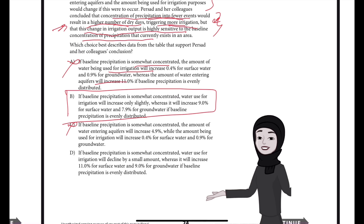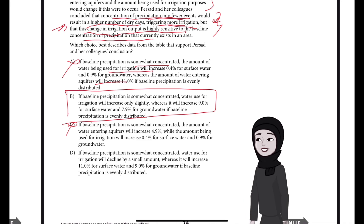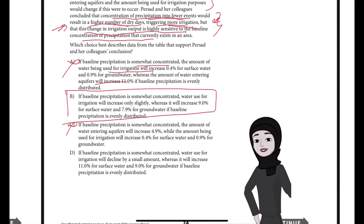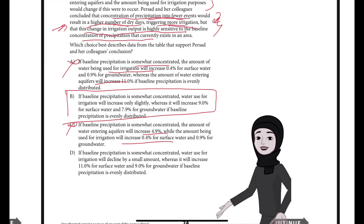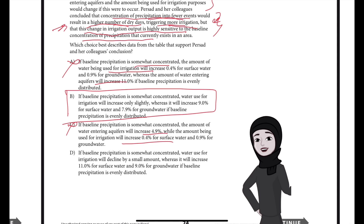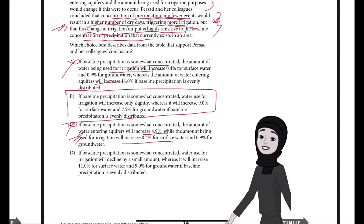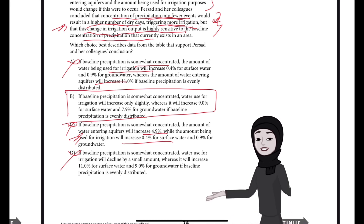Choice C is incorrect because it supports only part of Prasad and her colleagues' conclusion. According to the text, the researchers conclude that concentration of precipitation into fewer events will trigger more irrigation, but that this change in irrigation output will be highly sensitive to an area's baseline concentration of annual precipitation. The data in choice C supports only the idea that more irrigation will be needed, but to support the rest of the conclusion, additional data from the table are required to show that increases in water used for irrigation will vary depending on how concentrated or spread out the annual precipitation already is. Choice D is incorrect because data in the table indicate no declines in water use for irrigation, showing only increases in the form of positive values.